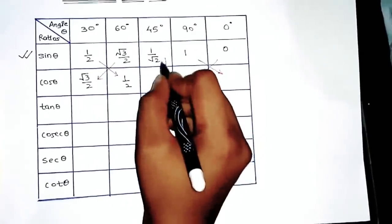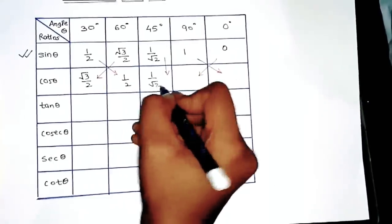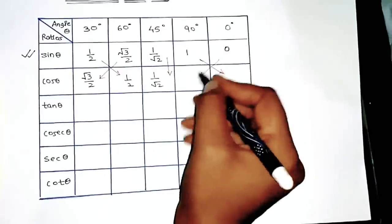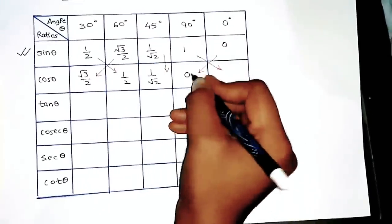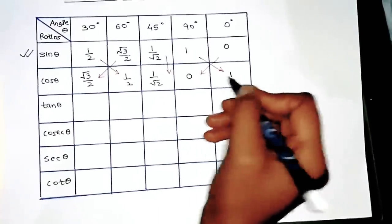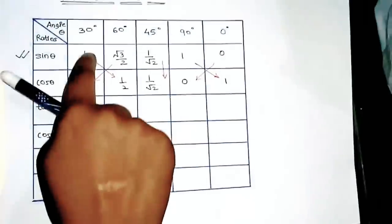It's nothing but the same. See, again for 45 degree it will remain the same, 1/√2. Now for cos 90 it will come 0, which is sine 0, and here it will come 1.